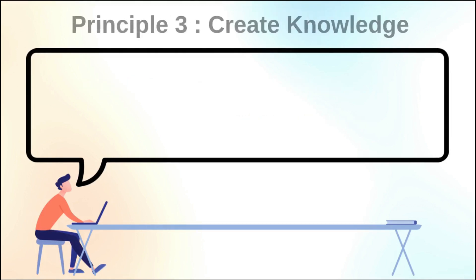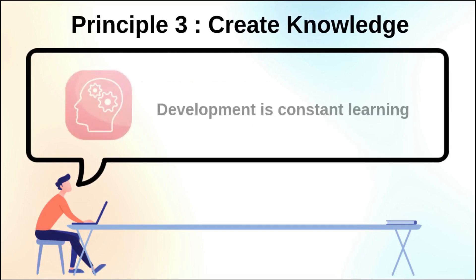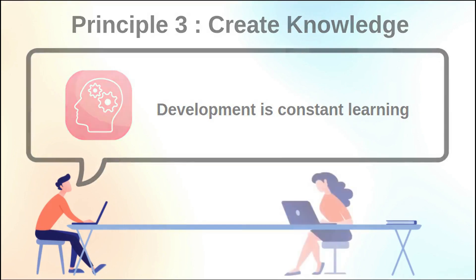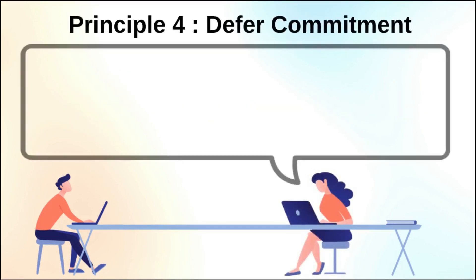The third principle is creating knowledge, which is also known as amplifying learning. This is really where lean software delivery differs from the manufacturing industry. Development is constant learning. We know that there are going to be issues and we need to learn from them and make adjustments. Feedback loops are extremely important to address this principle.